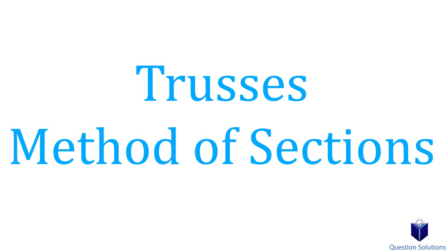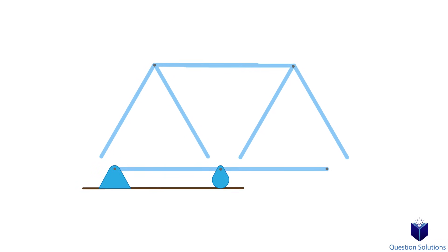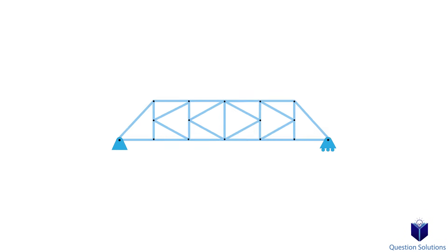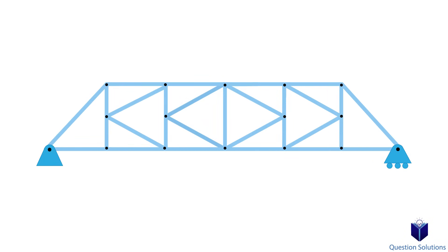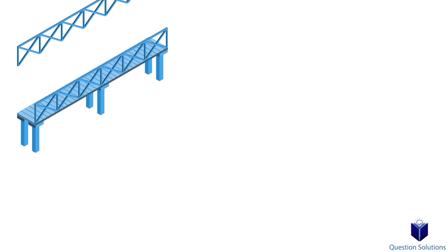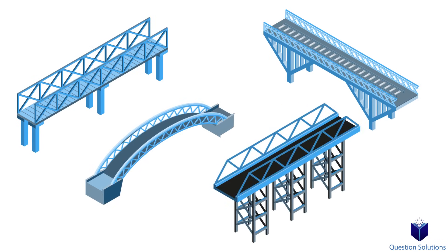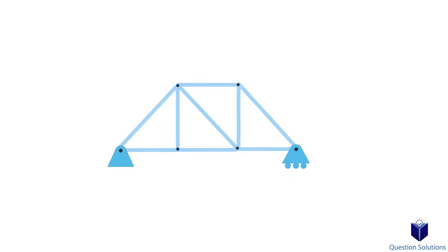In the previous video we talked about solving trusses using the method of joints, which is very useful when we have to solve for a large number of members or all the members. But what if you only wanted to find the forces in a few members? Instead of solving the whole truss, we can use a method called the method of sections.